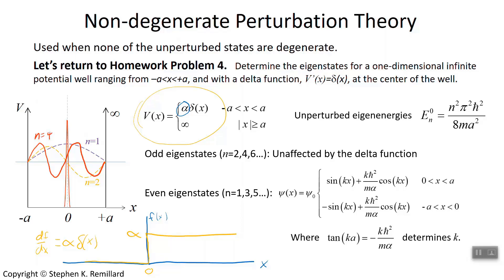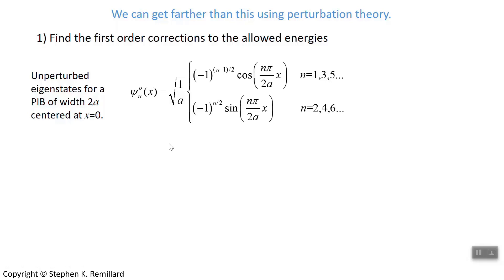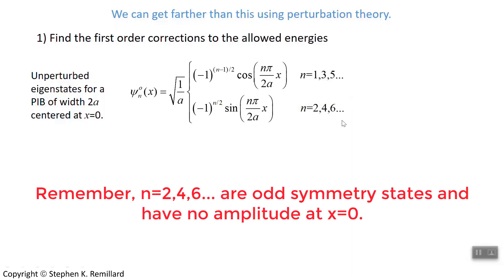So that was our review of problem 4, which we're going to redo now using non-degenerate perturbation theory. We can do that because there are no degenerate states in a particle-in-a-box system. The first thing you'd normally do is find the allowed eigenenergies in the perturbed system. We already have the eigenenergies for the unperturbed state — without the delta function present, these are the eigenstates for a particle-in-a-box centered at x equals 0 of width 2a. Even values of n have a sine of x, meaning the wave function is 0 at x equals 0, so the wave function is 0 where the perturbation is.